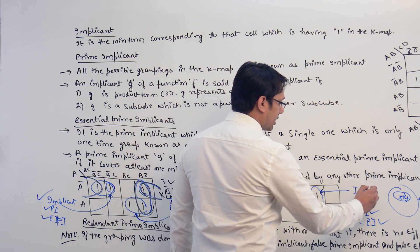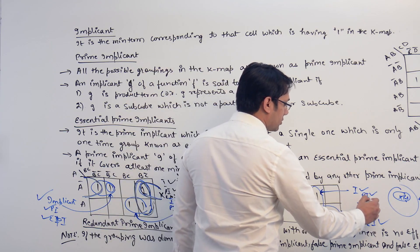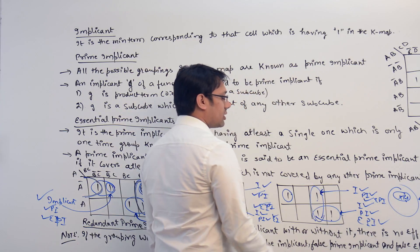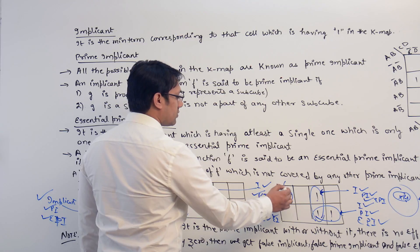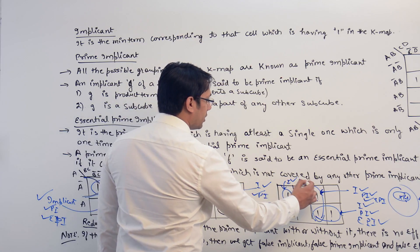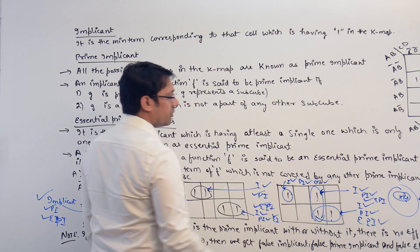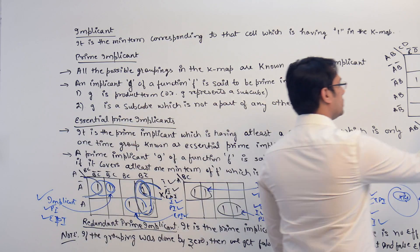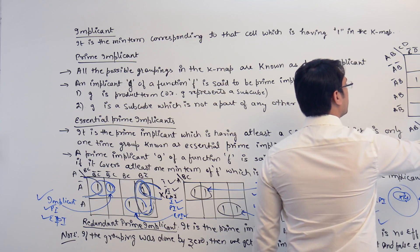Now this subcube is an implicant. It is a prime implicant. It is also an essential prime implicant because it is covering this one which is not covered by anything else. And this one — it is an implicant, it is a prime implicant, as well as it is an essential prime implicant, because it is not covered by anything else.